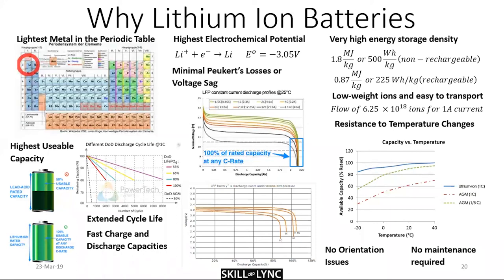Lithium has the highest electrochemical potential because it is the most electropositive of all metals. Voltage sag is also very important: a fully charged lithium-ion cell starts at about 4.2 volts and stops at about 2.5 volts, and throughout most of that range the voltage curve is pretty much flat. You want it to be flat because you don't want the output voltage to change with state of charge. Lithium-ion also has very high energy storage density — easily the best in the market right now, if you don't compare lithium polymer.